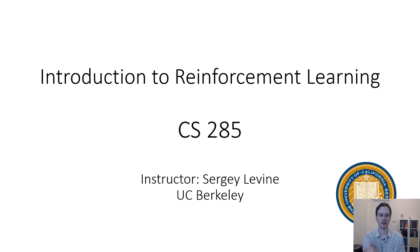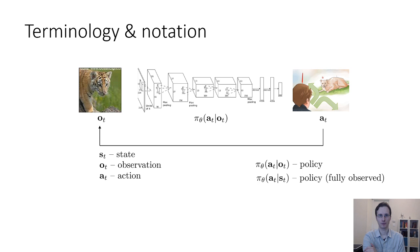So let's start with some definitions. First, let's go over some of the terminology that we covered in the previous lecture. When we talked about imitation learning, we learned that we can represent a policy as a distribution over actions a_t, conditioned on observations o_t. We call this policy pi, and we often use a subscript theta to denote that the policy depends on a set of parameters theta.